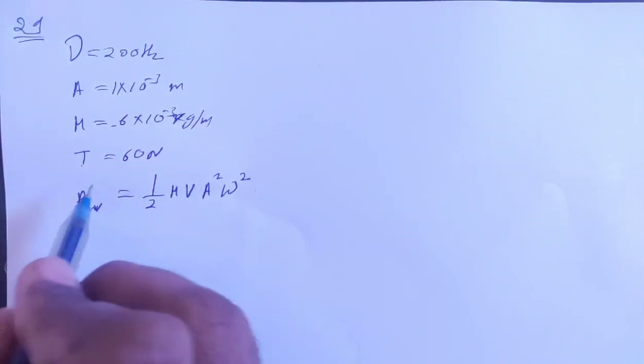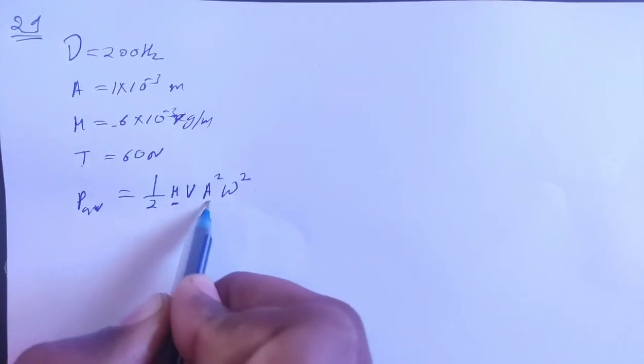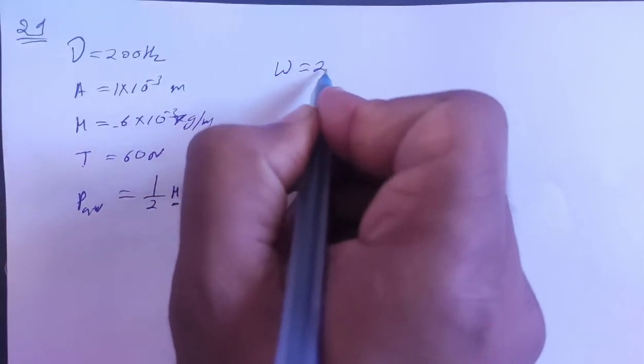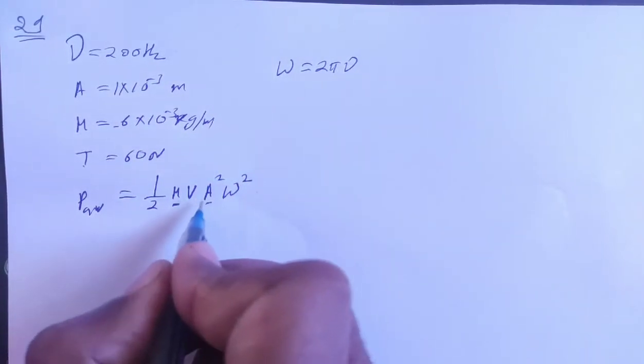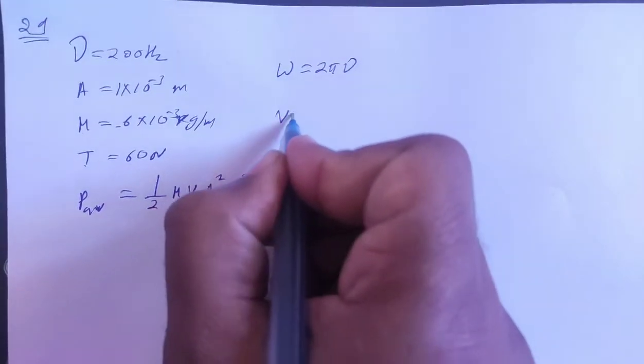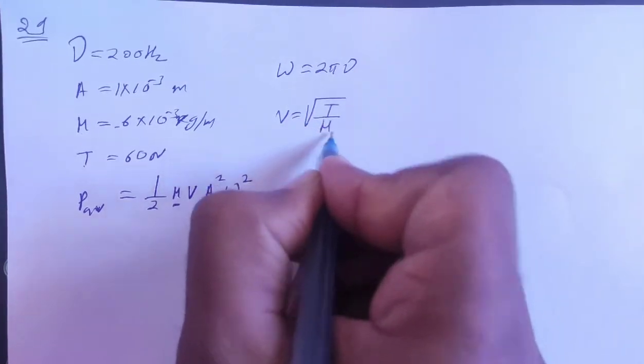So here we have the data. Amplitude, angular frequency equals 2π times nu. Next we have V, the speed, which equals root T by μ, root of tension by mass per unit length.